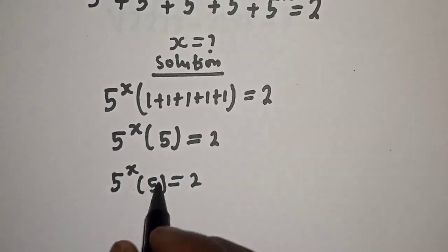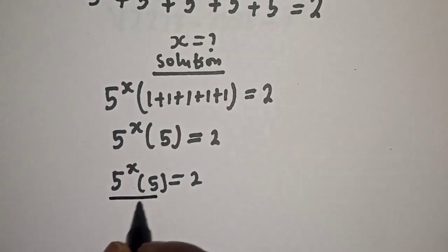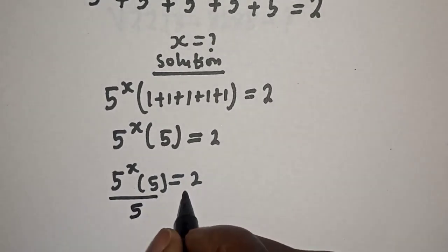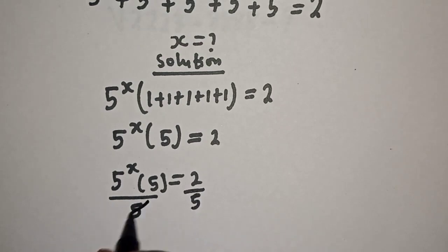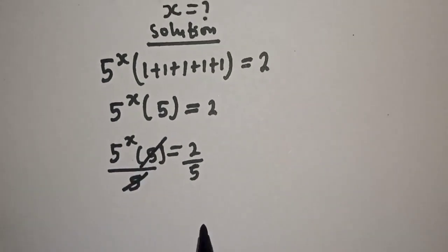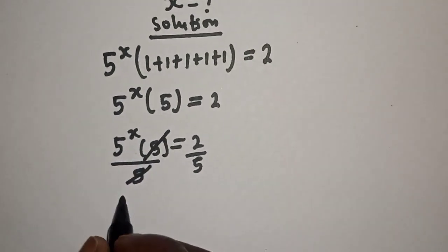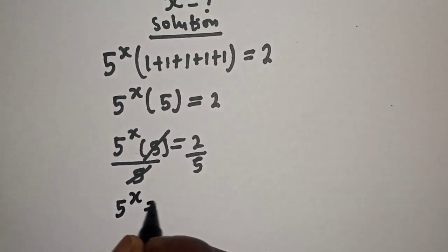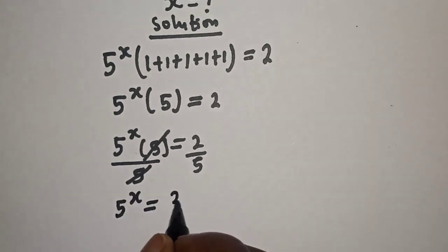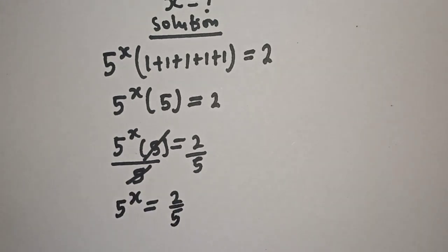Let's divide both sides by 5. This cancels, so 5 raised to power s is equal to 2 over 5.